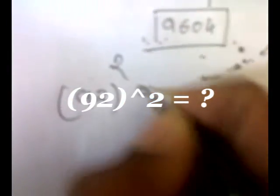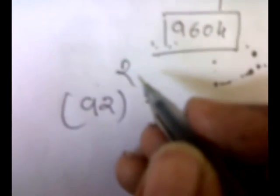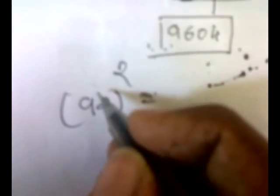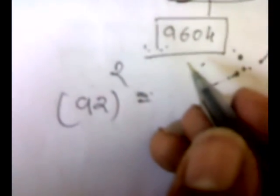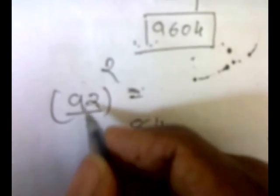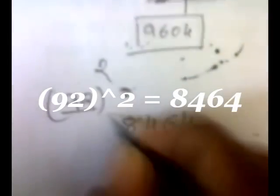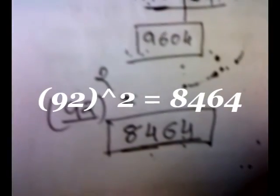Let's say 92 squared. 92 is 8 away from 100. We subtract 8 from 92 to get 84 — the first two digits. Then the square of 8 is 64. So our answer is 8464.